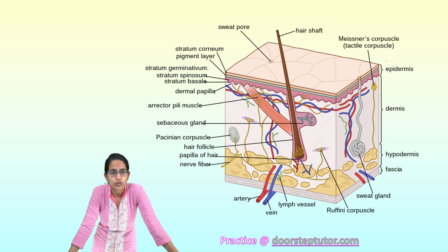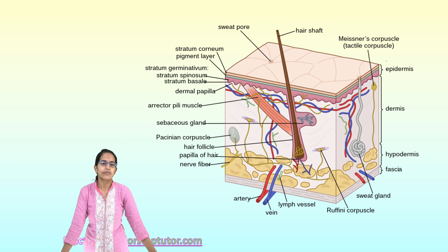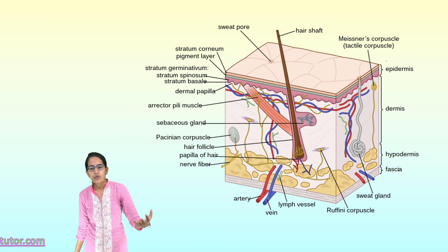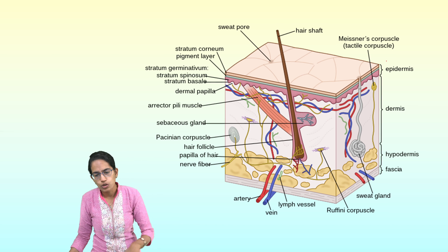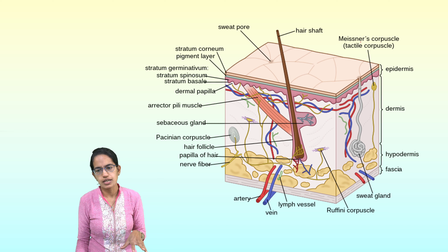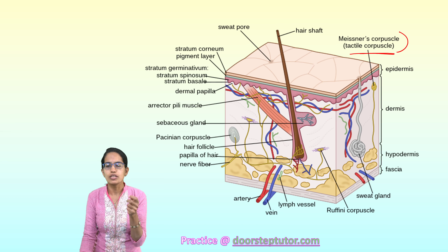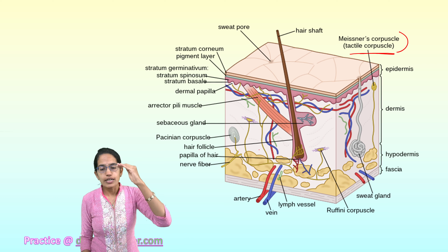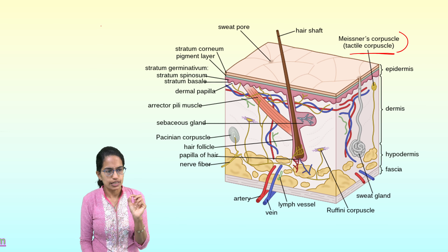Understanding the derivatives of the skin is extremely important. The few important derivatives are nail, hair, sweat glands, sebaceous glands, and mammary glands. If we look at the diagram here, there are various corpuscles — Meissner's corpuscles, or what are known as tactile corpuscles — which are responsible for the touch sensation.